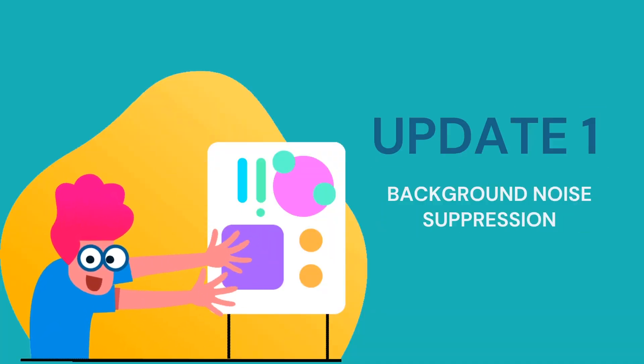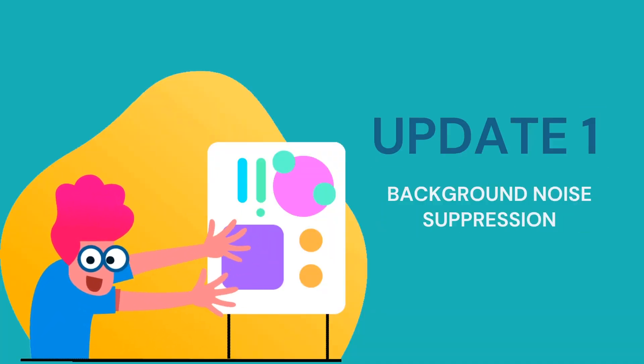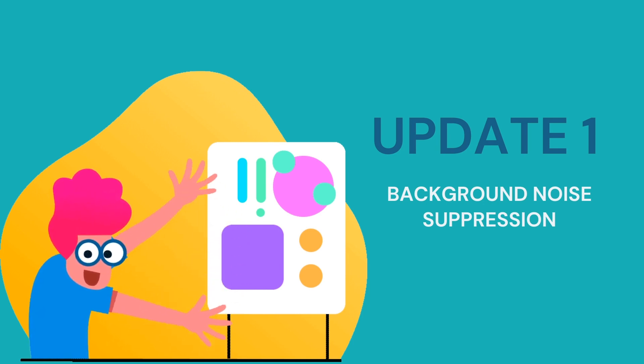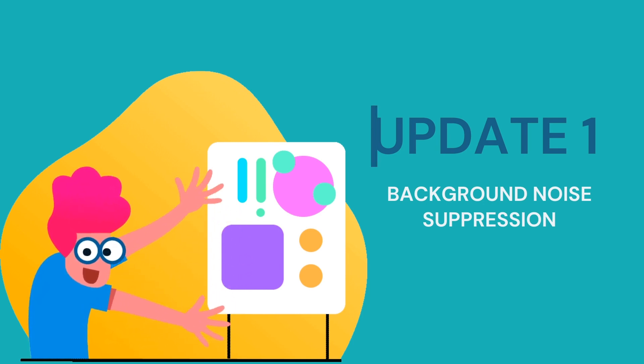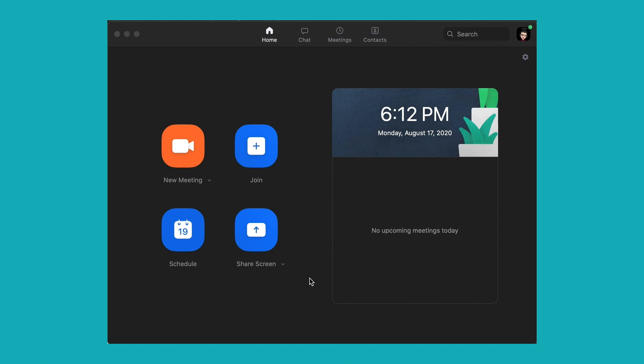The first update is background noise suppression — this will really come in handy. The Zoom client has options that allow the utilization of noise suppression, and it can help remove different types of background noises that your microphone might pick up: paper crunching, keyboard typing, fan noises — things like that can all be filtered out to a degree to make the meeting experience a little bit better.